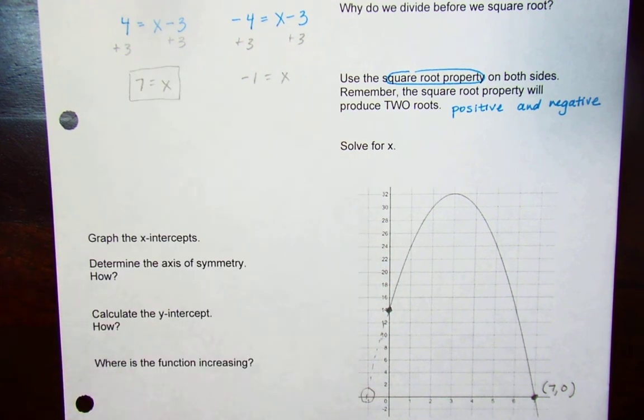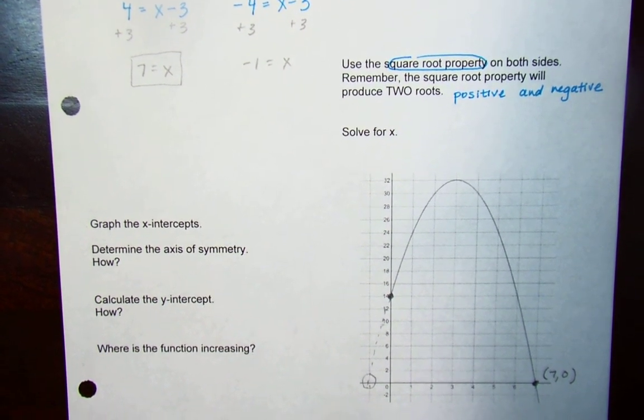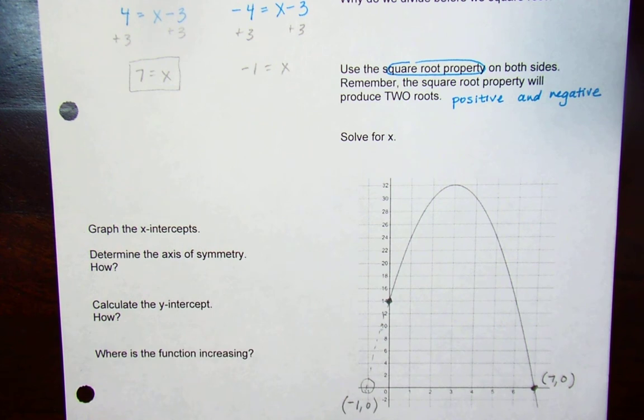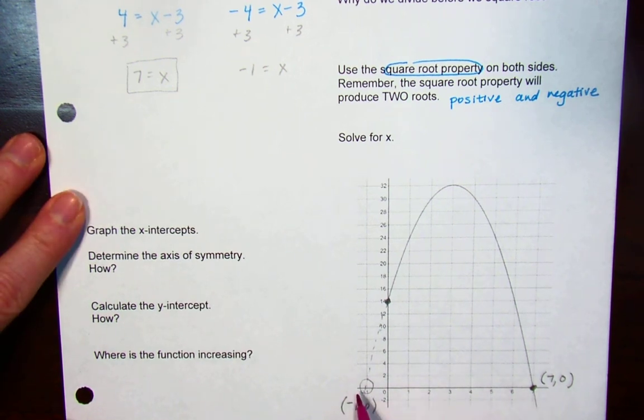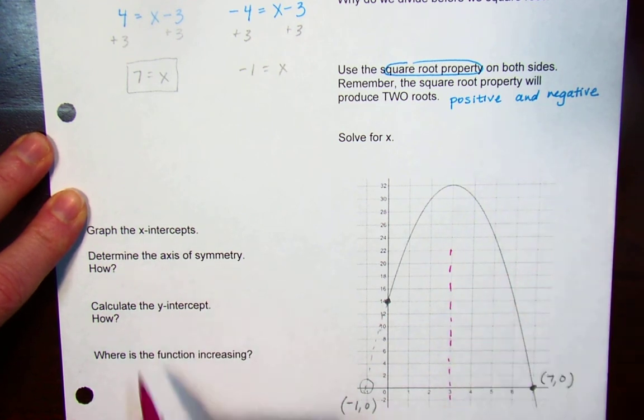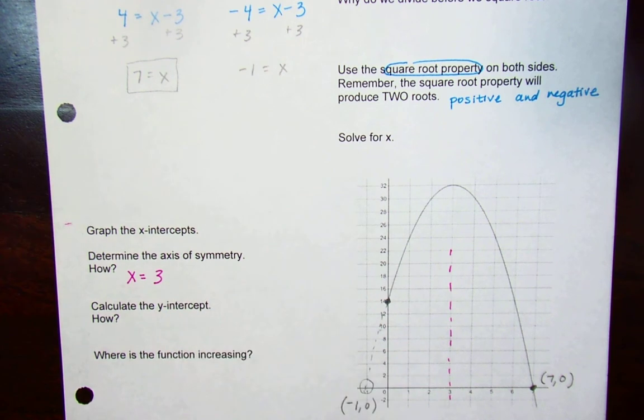We graphed our x-intercepts. How do we determine the axis of symmetry? It's halfway in between these x-intercepts, halfway in between negative 1 and 7. So that would be 8 units between these, meaning I have to count over 4 this way or count over 4 this way to find that axis of symmetry at x = 3.